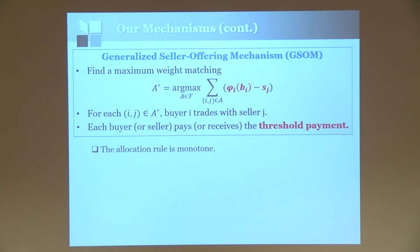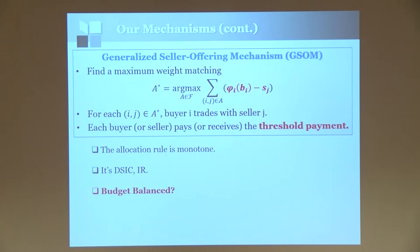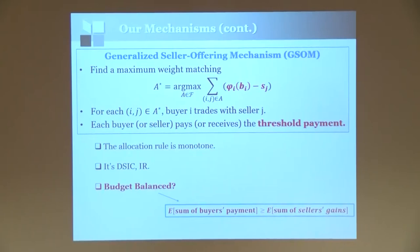In our mechanism, the allocation rule is monotone — non-decreasing in the buyer's value and non-increasing in the seller's value. With threshold payments, we can argue the mechanism is dominant-strategy incentive-compatible and individually rational. The remaining question is budget balance. While threshold payments may differ between buyer and seller in a single instance, we prove that in expectation over the distributions, the sum of all buyers' payments is at least the expected sum of all sellers' gains — so the mechanism never needs to inject extra money and can keep the surplus.